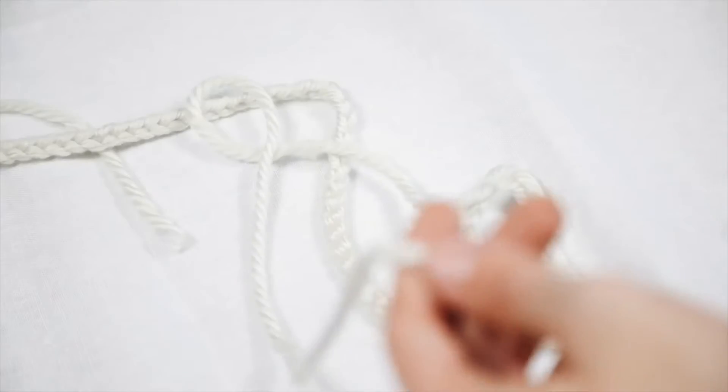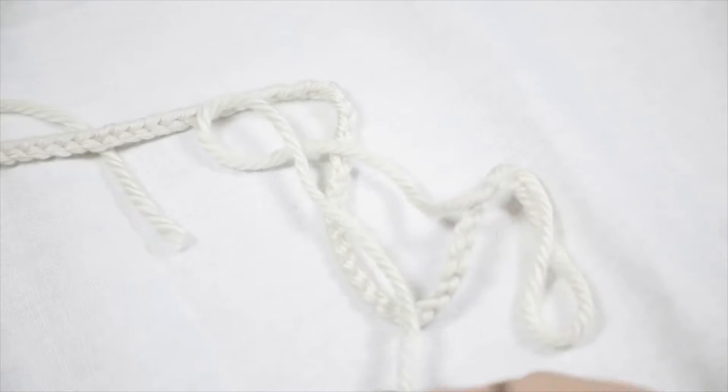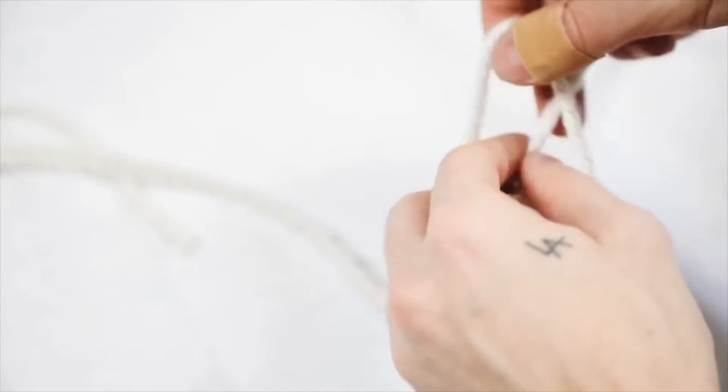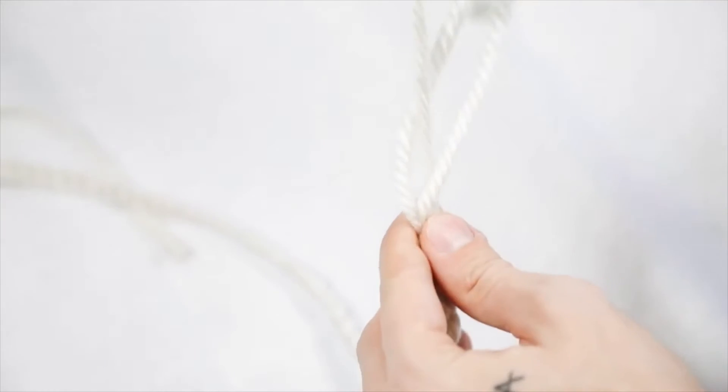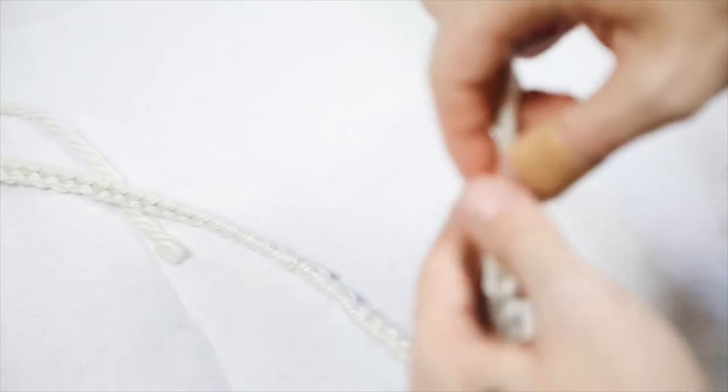When you get to the end, all you need to do is cut off and then put that tail end through the loop and pull it, and that actually just finishes off your chain stitch. This is going to be the cording that I'm going to be using for my hanging light.